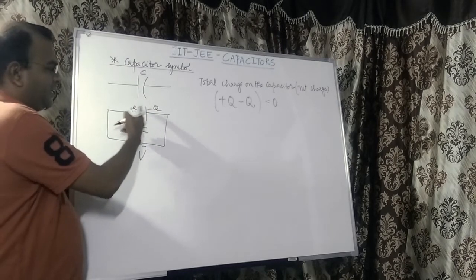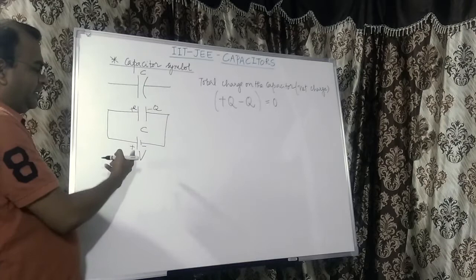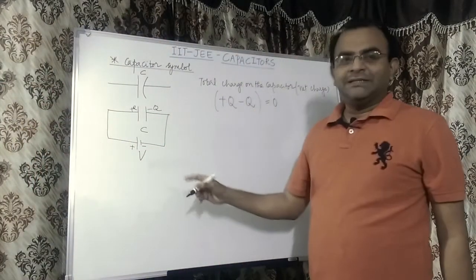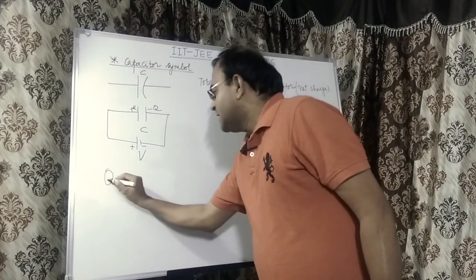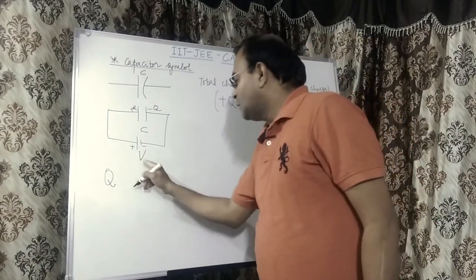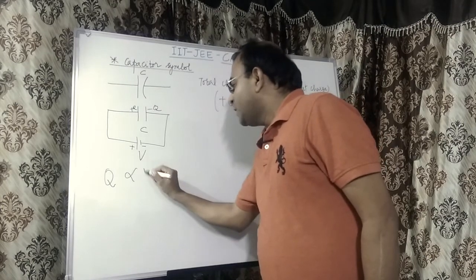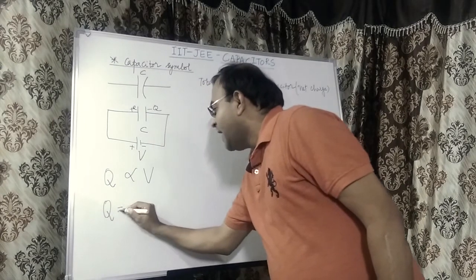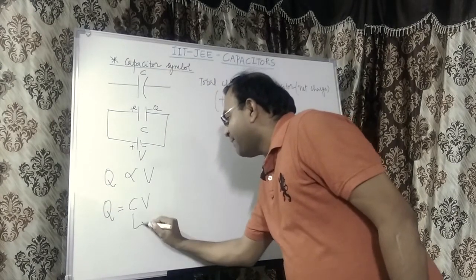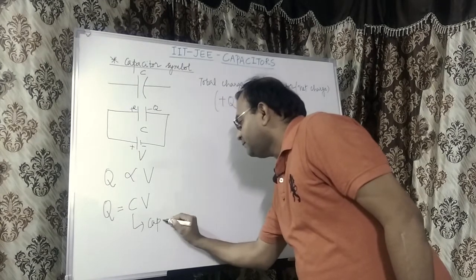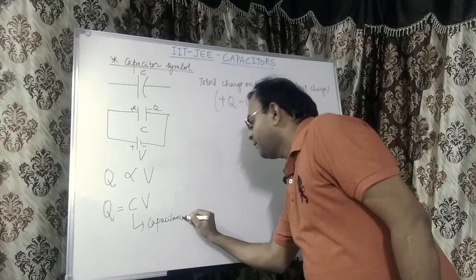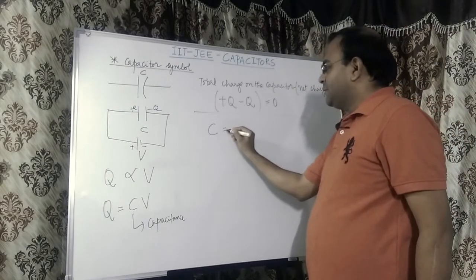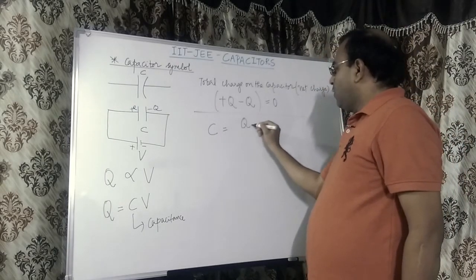The positive terminal of the battery is connected to one of the plates, so this plate is charged with plus Q. The negative terminal is connected to the other plate, and a charge of minus Q is injected onto it. These two charges are equal and opposite and form a capacitor. The charge on the capacitor is proportional to the potential difference V, and this constant of proportionality is C, the capacitance. So capacitance C equals Q over V.